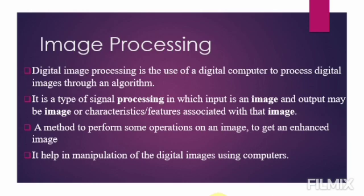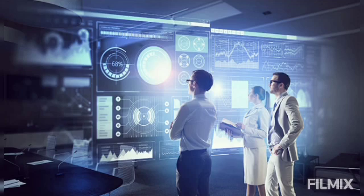Digital image processing is a method to perform some operations on an image to get an enhanced image or to extract some useful information from it. Digital image processing techniques help in the manipulation of a digital image through the use of computers. The purpose of early image processing was to improve the quality of the image.